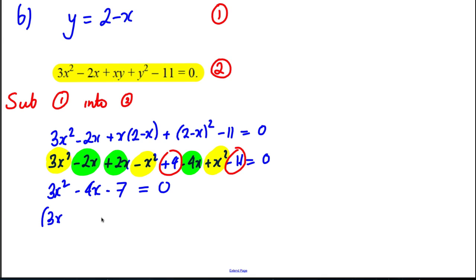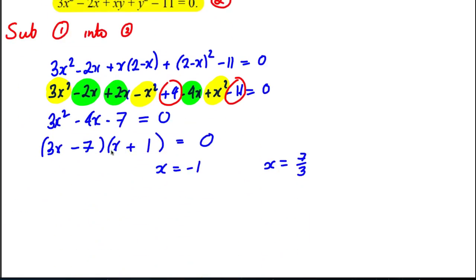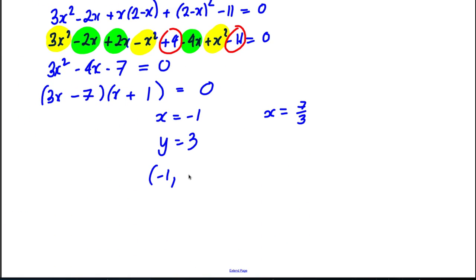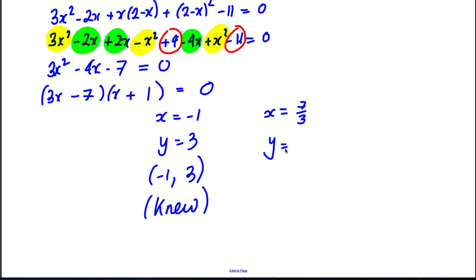Now we factorize 3x² - 4x - 7. We need factors of -7, so we try (3x - 7)(x + 1), which gives the perfect factorization. Therefore x = -1 or x = 7/3. When x = -1, substituting back gives y = 3 — the solution we already knew from part a. When x = 7/3, y = 2 - 7/3 = -1/3.